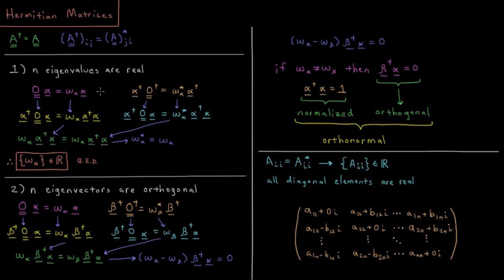We can take the complex conjugate of both of these sides. Taking the adjoint gives us the following expression: alpha dagger times O dagger equals omega alpha star times alpha dagger. We have the adjoint of alpha, making this a row vector; the adjoint of O, which is still just equal to O; the adjoint of our eigenvalue is just its complex conjugate because it's a scalar; and once again our row vector for the eigenvector adjoint.